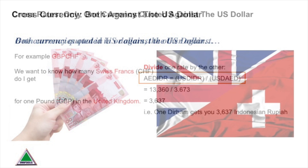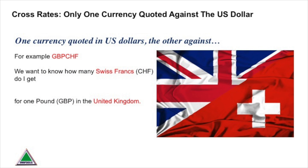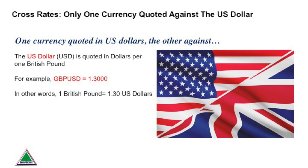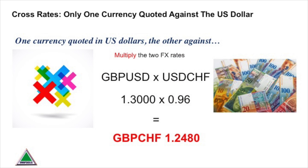What happens when one currency is quoted against the dollar but the other isn't? Let's use an example of the Swiss franc against the pound. The Swiss franc is quoted with the dollar as the base currency, and here we can see that for one dollar I get 96 Swiss centimes, or 0.96 of a franc. When we look at sterling against the dollar — what we refer to as cable in the dealing room — sterling is the base currency, so one pound gets you $1.30. Since the dollar is the base currency on one but not the other, we multiply the two FX rates, and now we find that one pound gets you 1.25 francs.